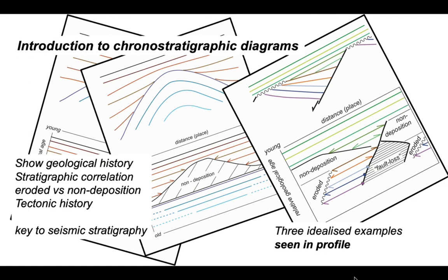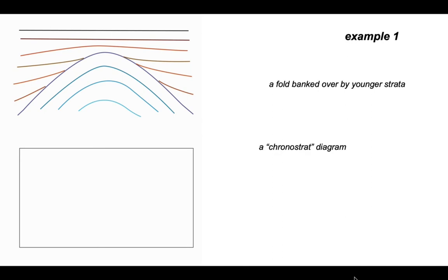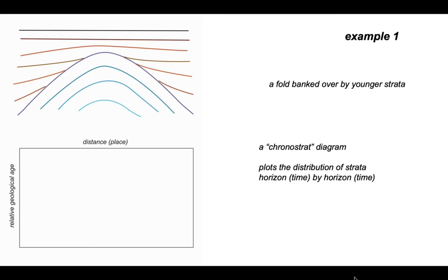In this presentation we're going to look at three idealized examples, all based on profiles. Example one is a fold banked over by younger strata. To construct the chronostrat diagram, we start with a frame. The diagram plots horizontal distance against relative geological age, with young at the top and old at the bottom. When interpreting a section like this, it's always easier to work back in time, starting with the youngest strata and working systematically back through, plotting each horizon in reverse order to which it was deposited.